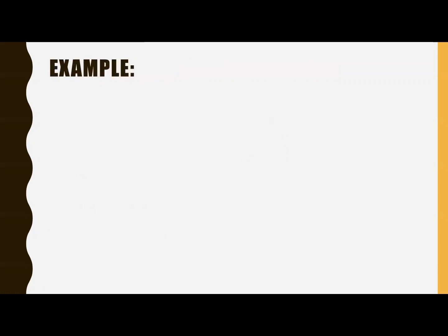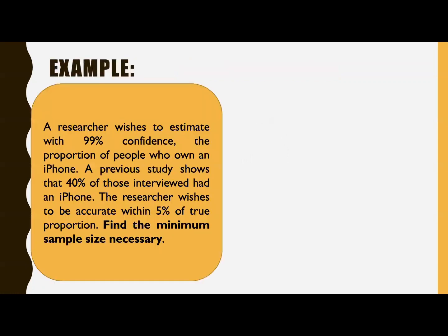So we have an example. A researcher wishes to estimate with 99% confidence the proportion of people who own an iPhone. A previous study shows that 40% of those interviewed had an iPhone. The researcher wishes to be accurate within 5% of the true proportion.